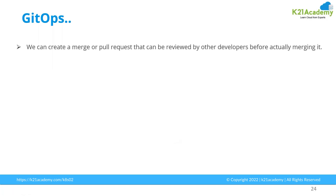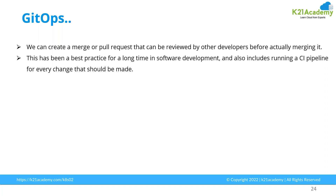With GitOps you can create a merge or pull request that can be reviewed by other developers before actually merging it. In the GitOps world, especially when using Git, you can pull the code to your laptop and work offline. Once you're done, you can push that code to GitHub. Once uploaded to the Git repository, you can merge those updates and use that pull request to deploy an application. This process follows best practices used in software deployment, and through the CI/CD pipeline, the pipeline can deploy the application by taking the latest code from the Git repositories.